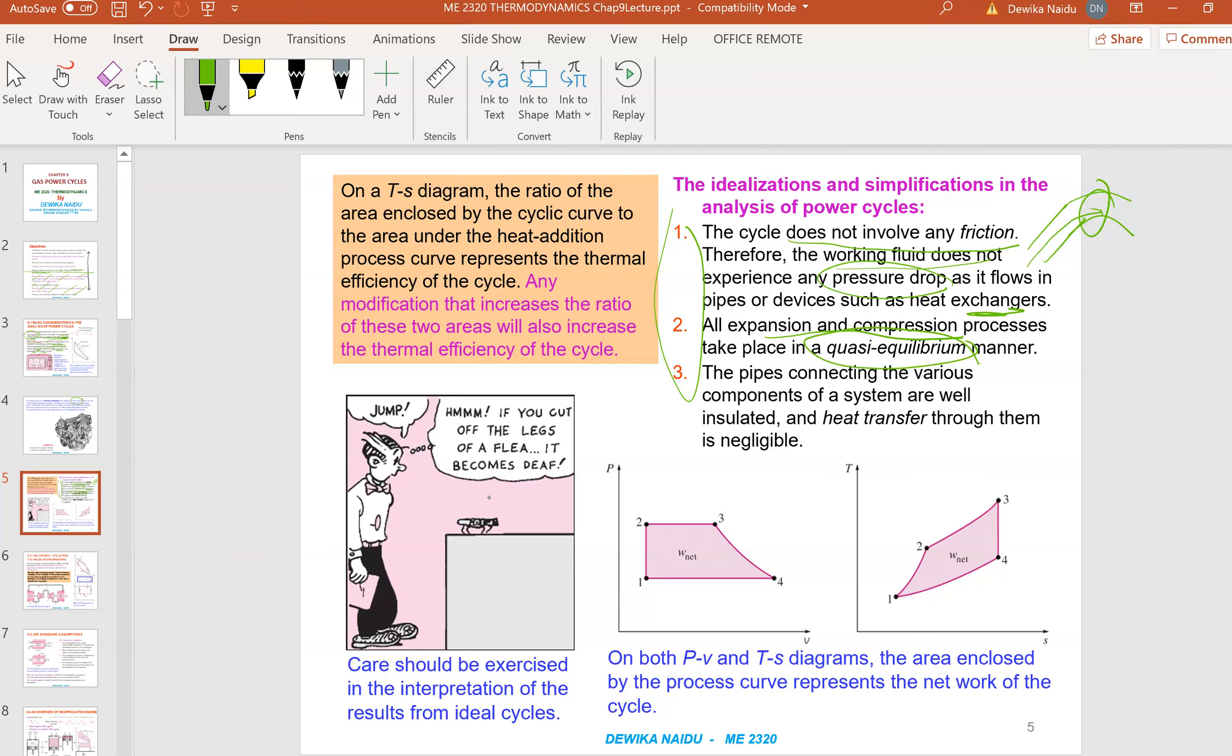All expansion and compression is in a quasi-equilibrium manner. Remember what I told you about quasi-equilibrium manner? Slow and steady. And the pipes connecting the various components and the systems are well insulated. So there is no heat transfer and heat loss between them. These are the idealization that need to be taken.